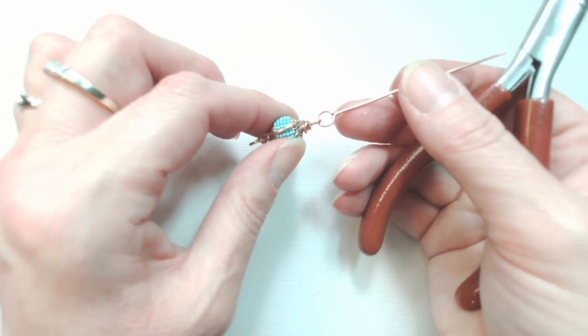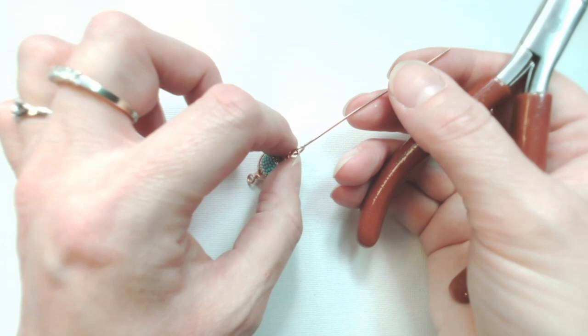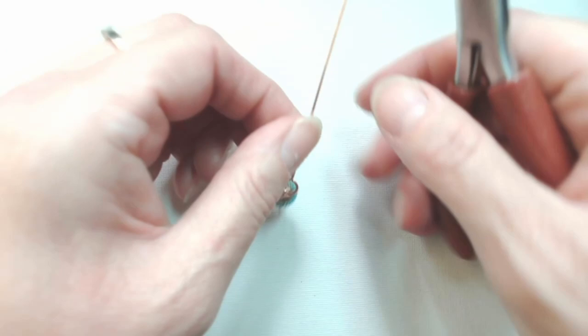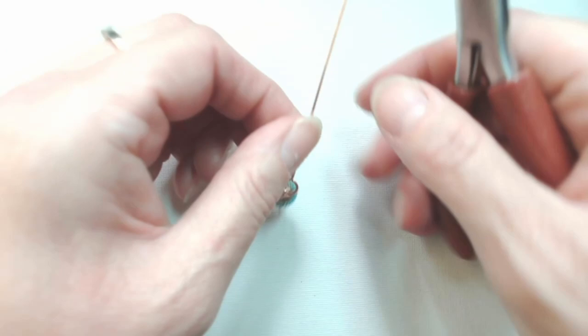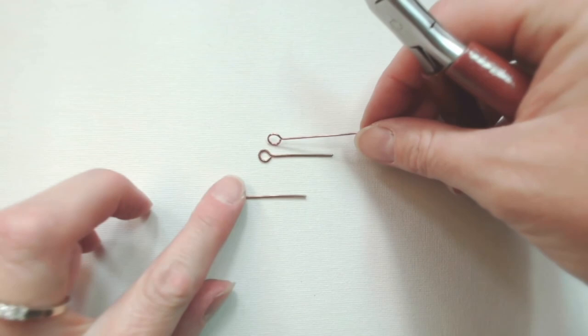You could then add on a couple more beads and create a simple or a wrapped loop at the other end. But as I said, one of the really useful things to do with your scraps of wire is to prepare yourself a bunch of eye pins or simple loops.